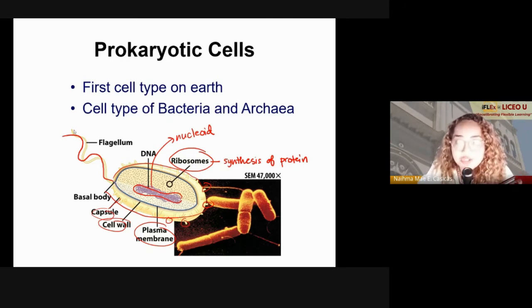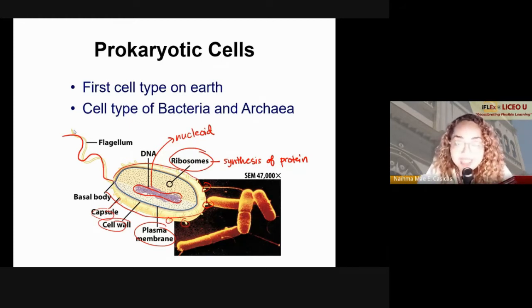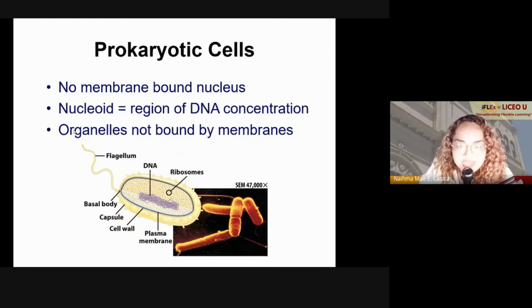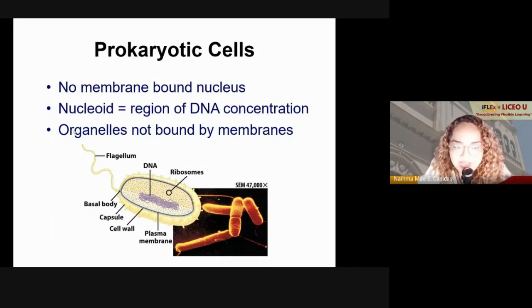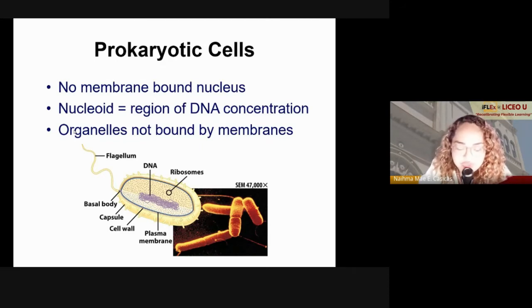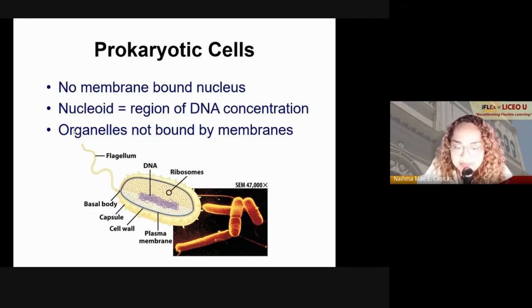In animals, the only cell type that has a flagellum is the sperm cell. Prokaryotic cells don't have a membrane-bound nucleus — only this region of DNA concentration called the nucleoid — and any organelles they have are not bound by membranes.